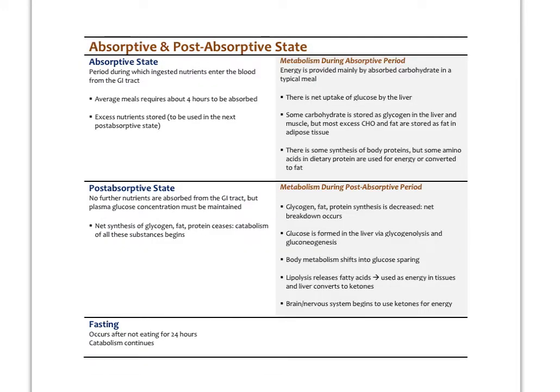There are a couple of definitions we need to look at first. The absorptive state is when you are absorbing all the nutrients you just ate — picking up glucose, amino acids, and so on from the intestines. The average meal takes between two and four hours to be fully absorbed: shorter with a high-carbohydrate diet, longer with more fat and protein.